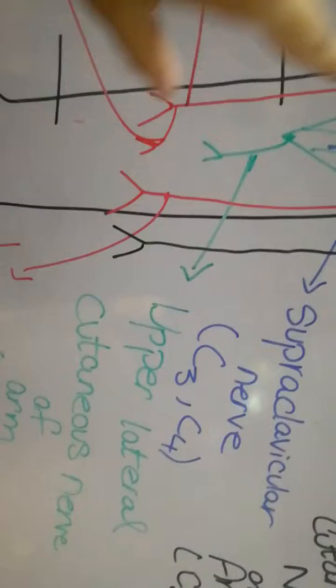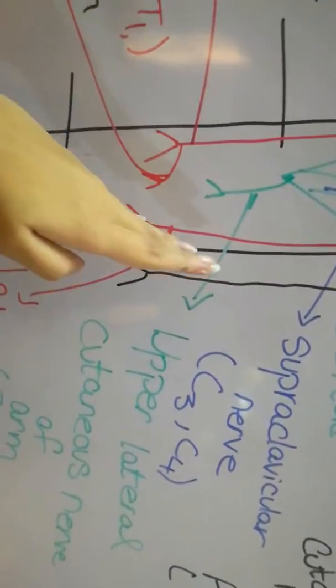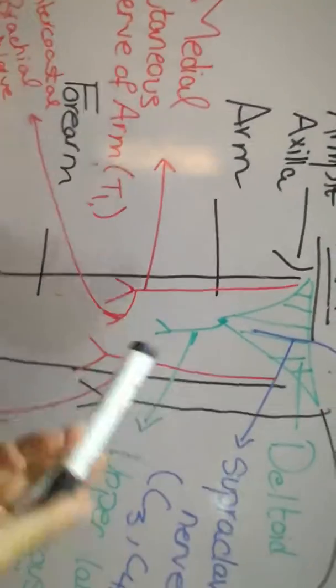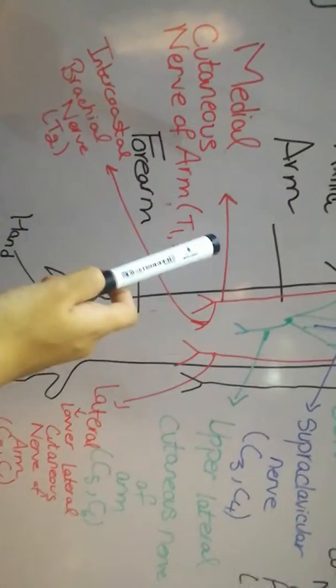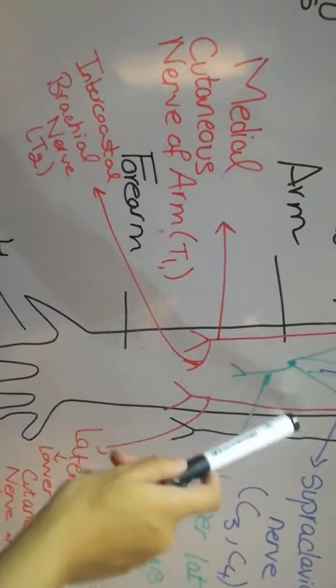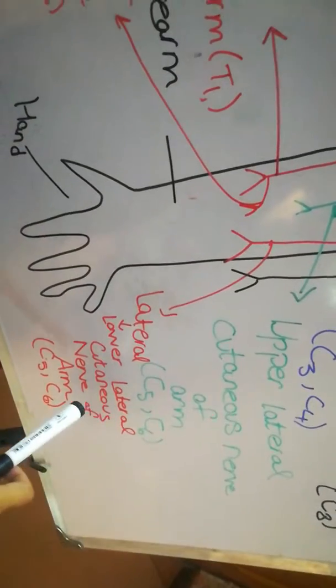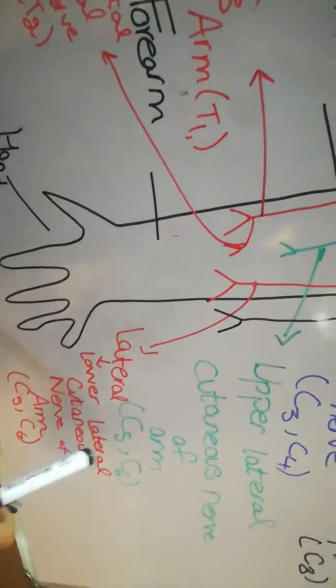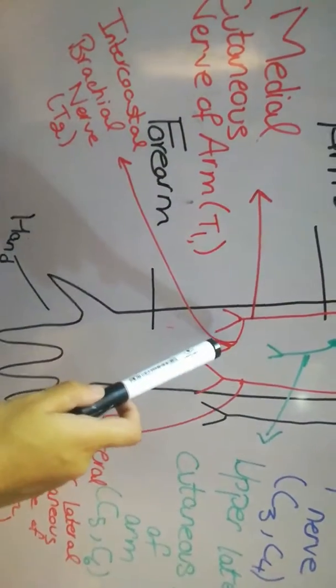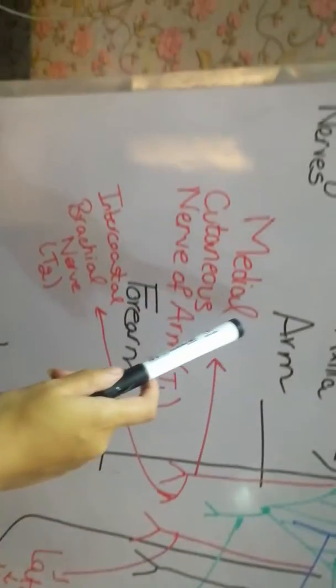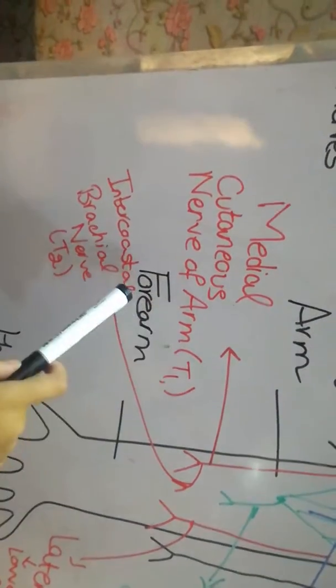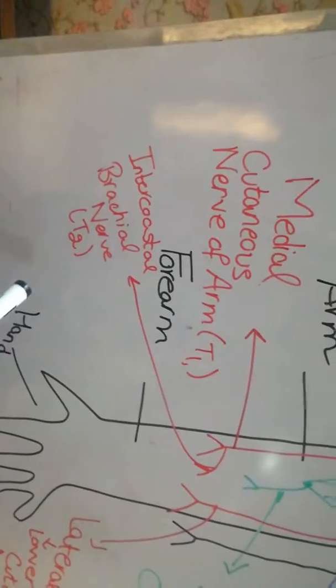Then there are two nerves. One is on the lateral side of the arm which means away from the chest cavity and one is on the medial side of the arm means towards the chest cavity. The one on the lateral side is known as the lower lateral cutaneous nerve of the arm and the one supplying the medial side is the medial cutaneous nerve of the arm T1 and the intercostal brachial nerve T2.